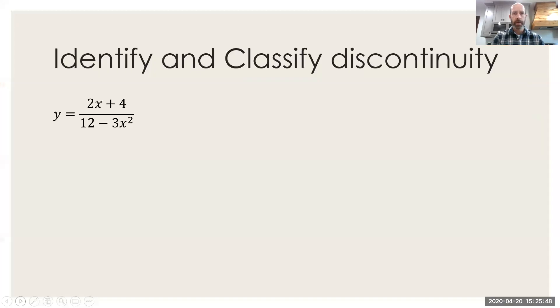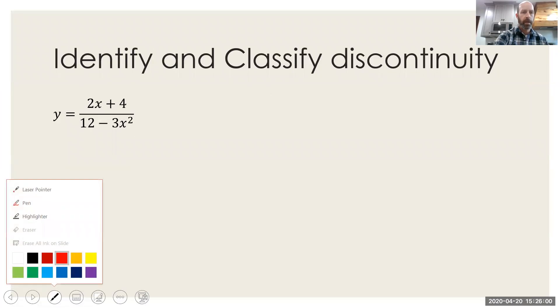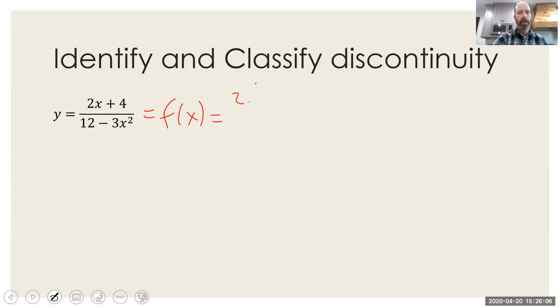So my first example here says identify and classify the discontinuities. So on this particular problem, this is f of x. And f of x can be factored as two times the quantity x plus two on the top. And then the bottom, you could factor out a common factor of three, and then you're going to get two minus x and two plus x. So we can see that when x is equal to two, and when x is equal to negative two, we've got some issues.